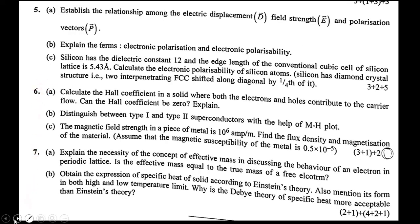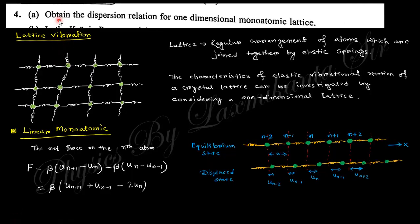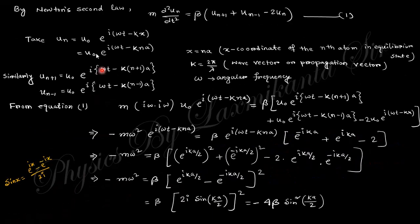Let's start. The first question says obtain the dispersion relation for one-dimensional monoatomic lattice. This is the monoatomic lattice in equilibrium state, and this is the displaced state. The force equation of the nth atom, if you consider this nth atom, the separation between n+1 and n, and separation between n-1 and n. The difference gives you the resultant displacement.